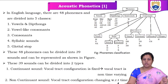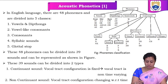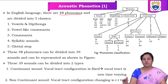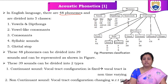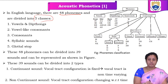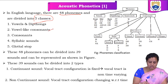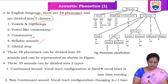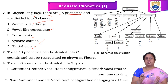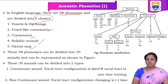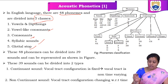In the English language, we have 48 phonemes. Each sound is called a phoneme. These 48 phonemes can be classified into five classes: vowels, diphthongs, vowel-like consonants, consonants, syllabic sounds, and glottal sounds. These are the different types of acoustic phonetics that we are dealing with.